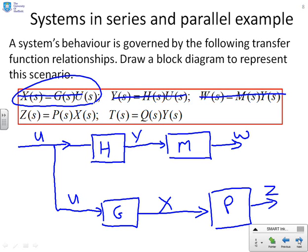And the other expression, T equals QY. So I get a takeoff point from Y. Put the arrow the same so I'm sure. That goes into Q, and out of here comes T. Now hopefully you're all happy with that. I've not done anything particularly complicated, just looked at the relationships I've been given, and represented the transfer functions by boxes and the signals by lines.